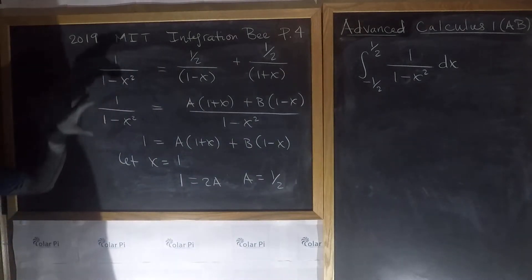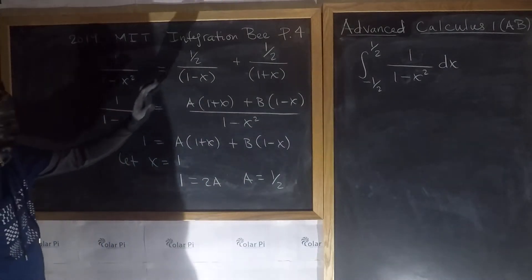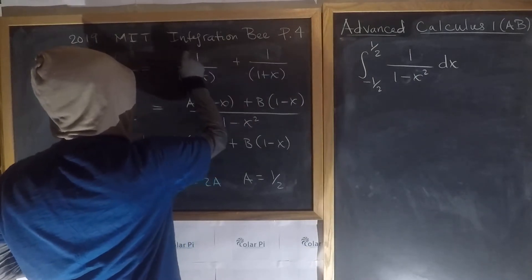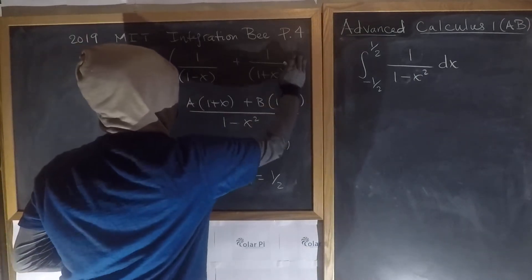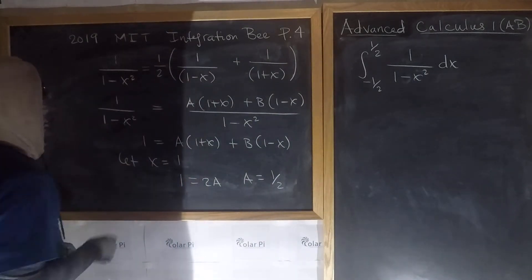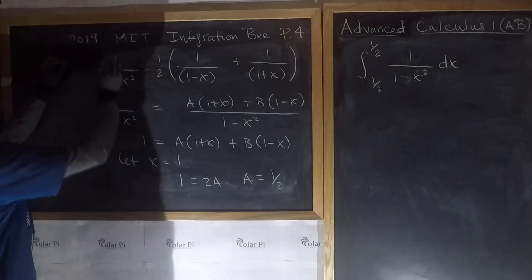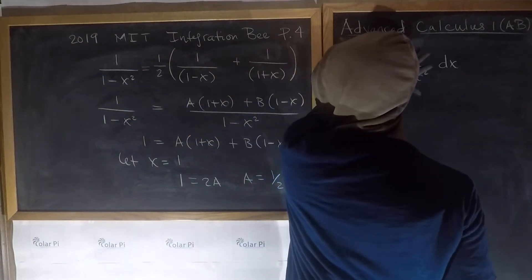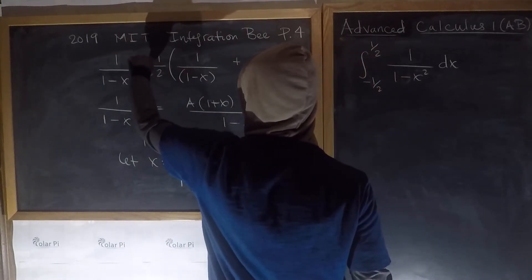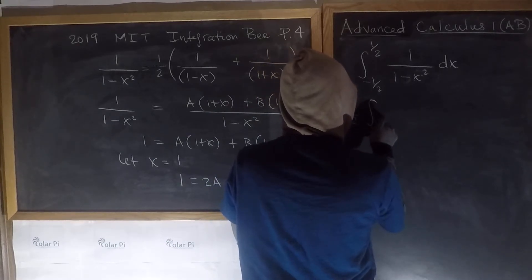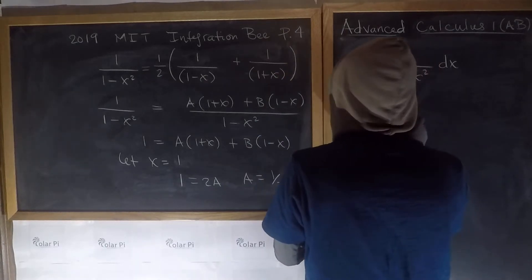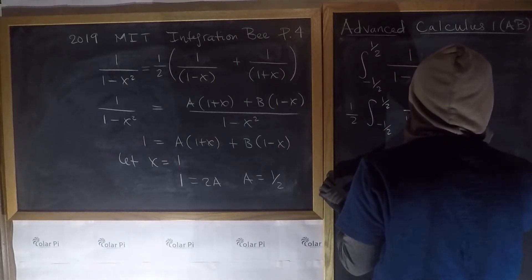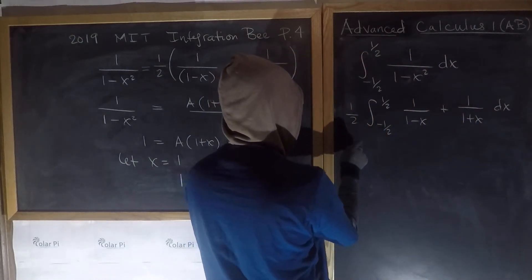So A equals one half and B equals one half. We can factor out a one half from both terms and rewrite the integrand as one half times the quantity 1 over (1 minus x) plus 1 over (1 plus x). We pull the one half in front of the integral, giving us one half times the integral of [1 over (1 minus x) plus 1 over (1 plus x)] dx.